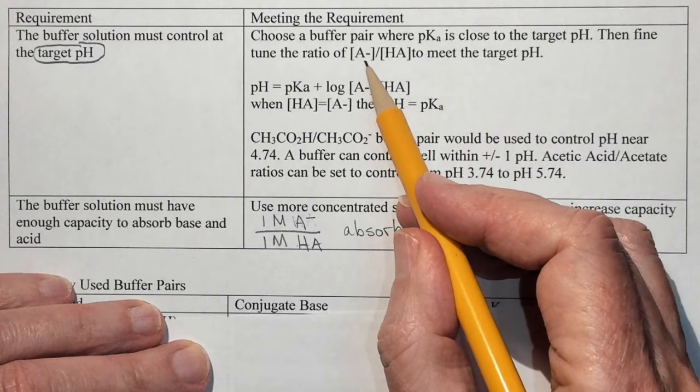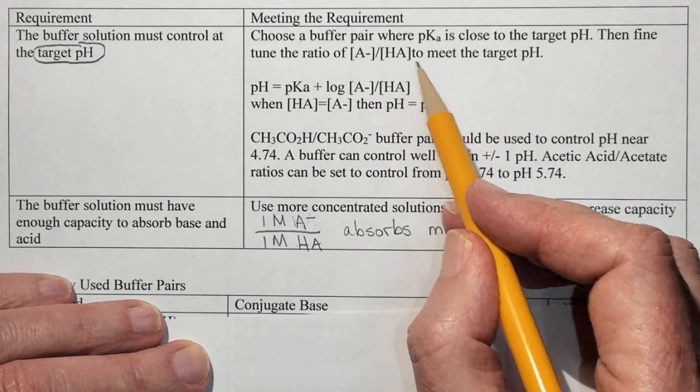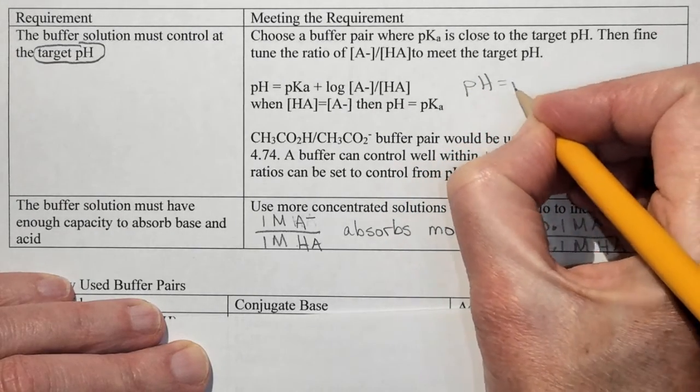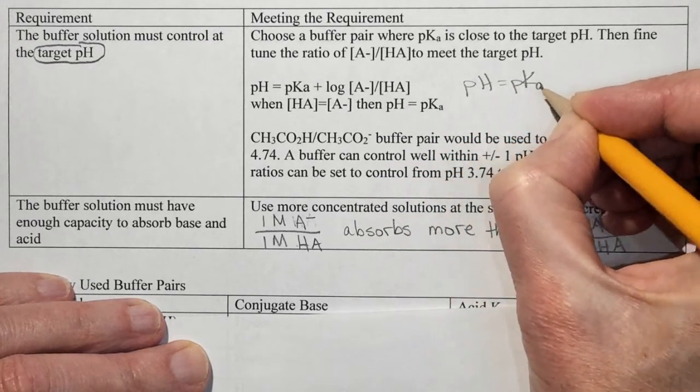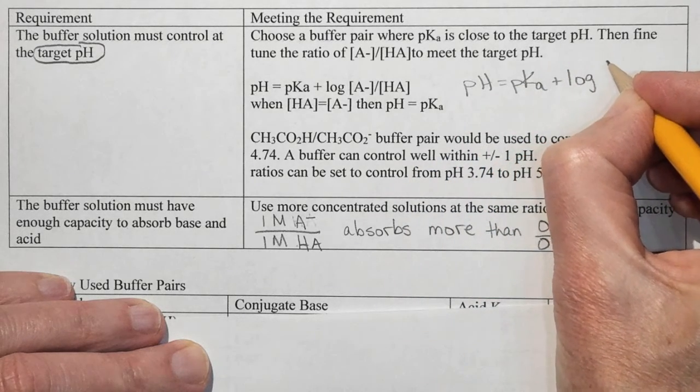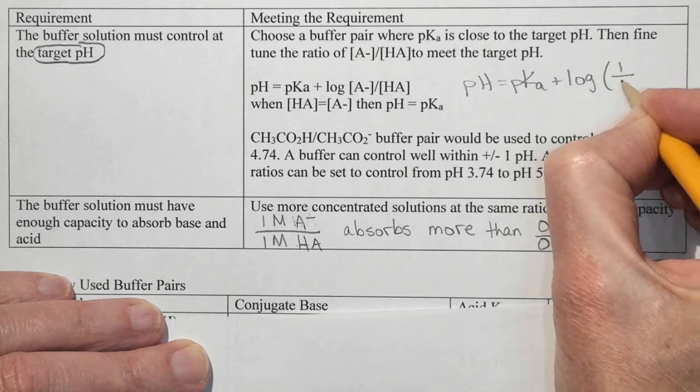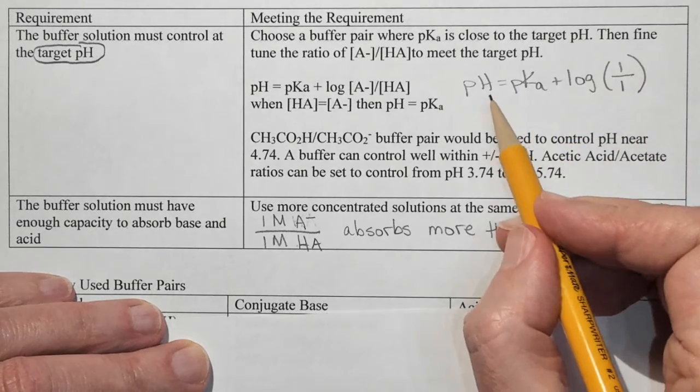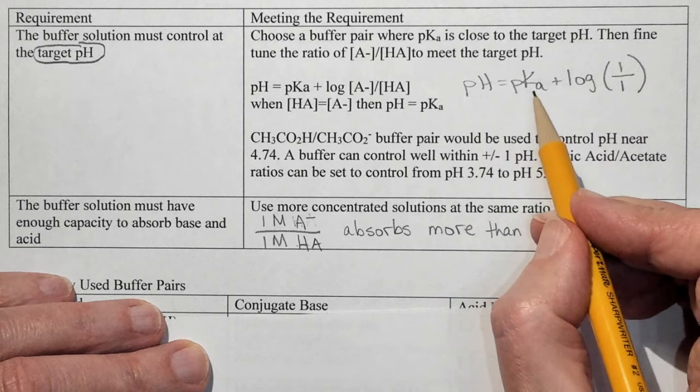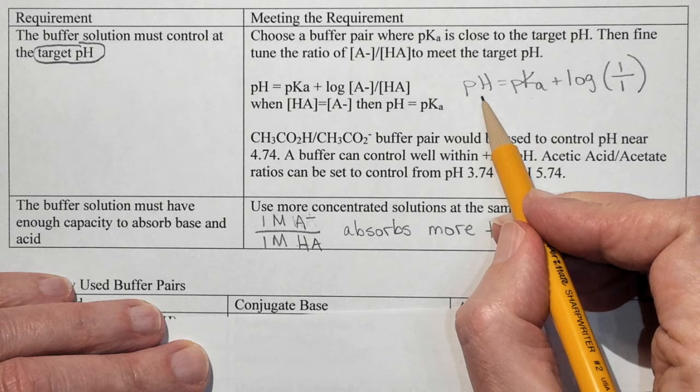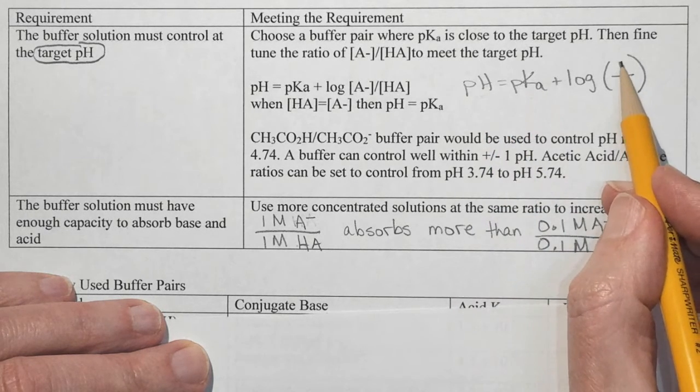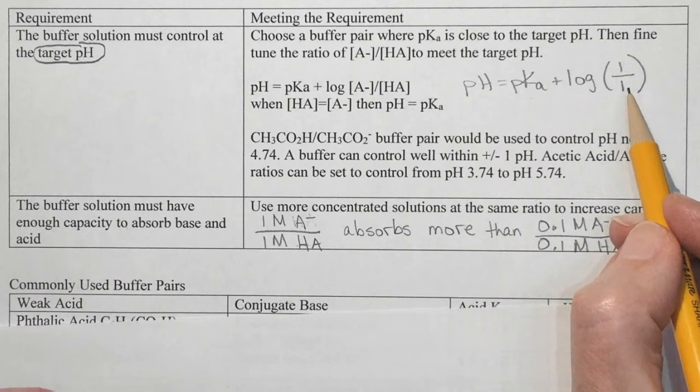Then we can fine tune the ratio of A minus to HA to meet the target pH. We've been using this equation pH equals pKa plus log A minus over HA. If we choose a one-to-one ratio that means that our pKa is going to equal our pH. So ideally we want something where the pKa is as close to the pH as possible so we can have a one-to-one ratio and have the most base capacity and acid capacity.